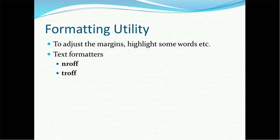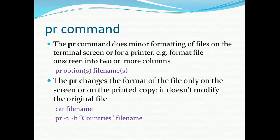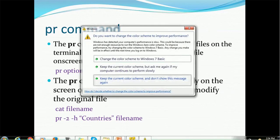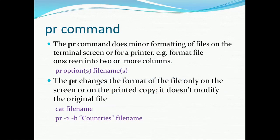To adjust the margins, highlight some words, etc., we have to use a formatting utility. The text formatters are nroff and troff — these are the text formatters available. In order to format data on your UNIX terminal, we have to use the PR command. The PR command is for minor formatting of files on the terminal screen or for a printer. For example, to format a file on screen into two or more columns, we can use the command: PR, then the option and the file name.